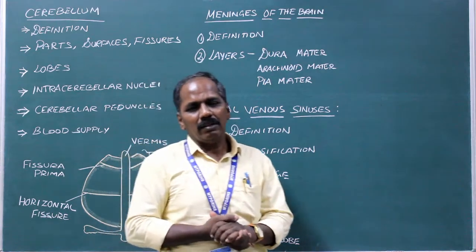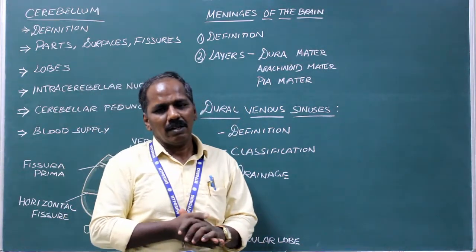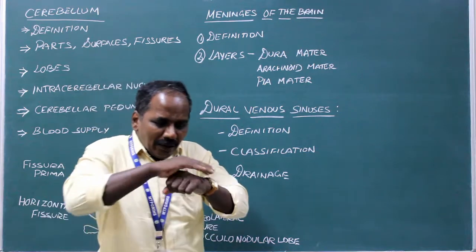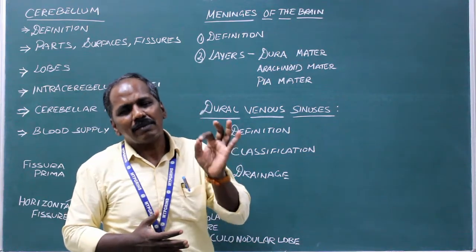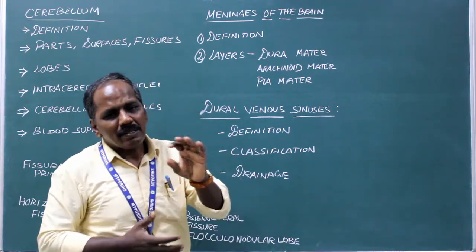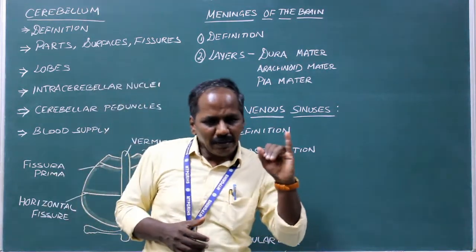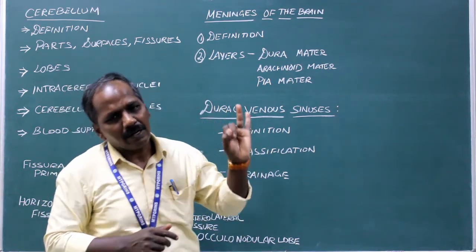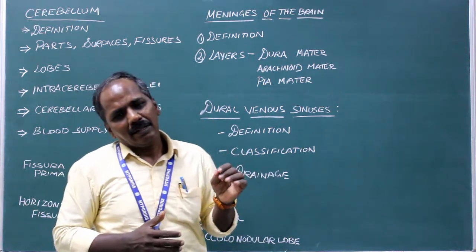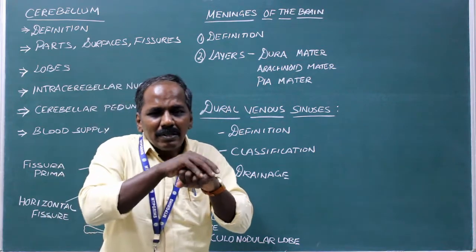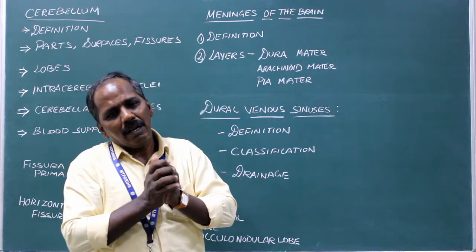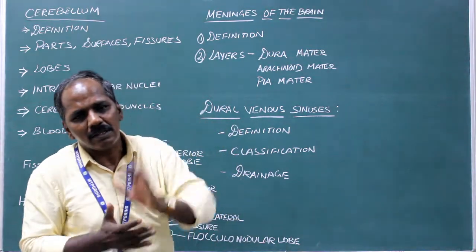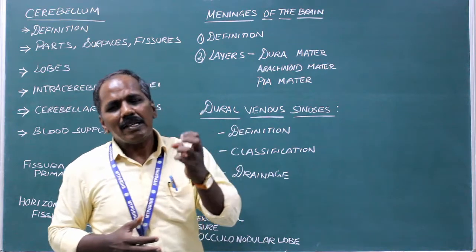Meninges of the brain. What are meninges? They are tough fibrous membranes which enclose and protect the brain and spinal cord. It consists of three layers: pia mater, arachnoid mater, dura mater — remembered as PAD. Pia mater is the innermost layer adhering to the surface of the brain. Arachnoid mater is the middle layer; on its surface you can see arachnoid granulations which drain the CSF.